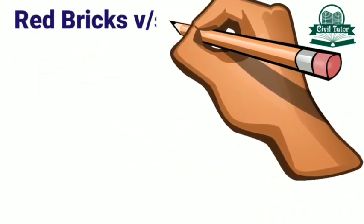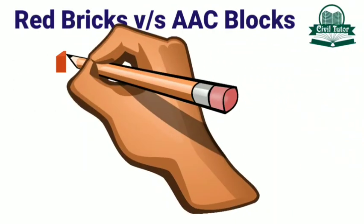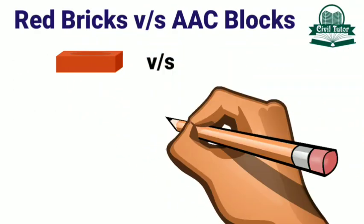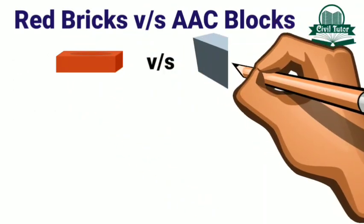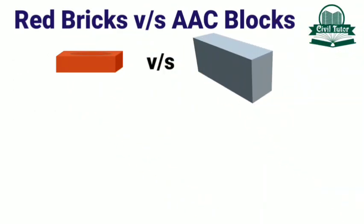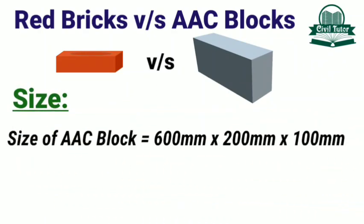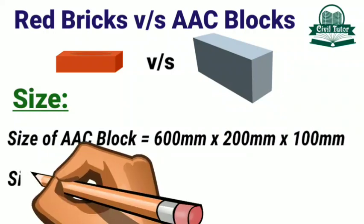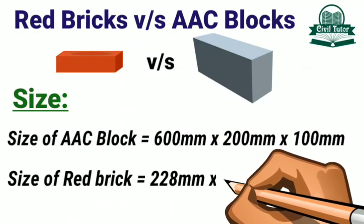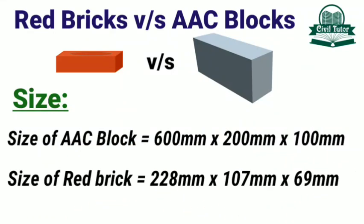Now let's compare the conventional red bricks and AAC blocks. The size of an AAC block is 600 x 200 x 100 mm, while that of a red brick is 228 x 107 x 69 mm.